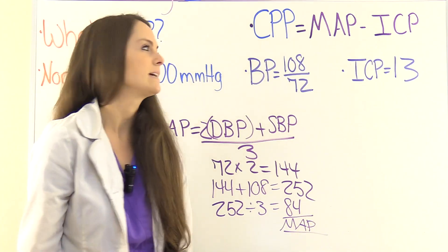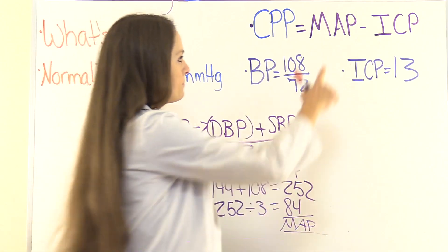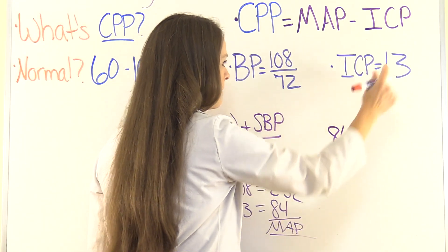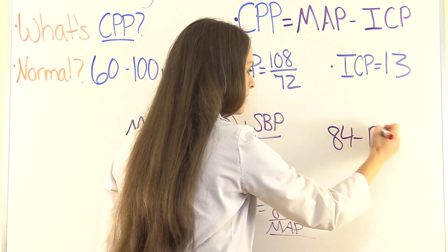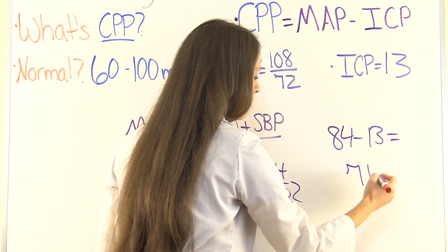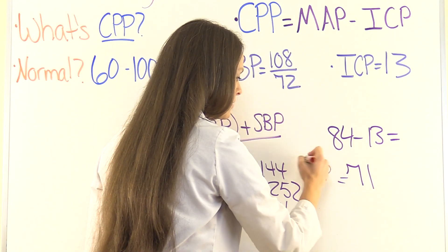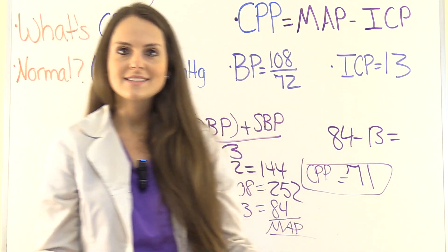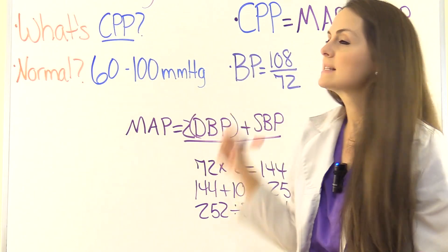Now it's super easy — we're going to plug in our numbers. MAP was 84, so 84 minus 13 — the intracranial pressure — equals 71. So our cerebral perfusion pressure is 71. And is this normal? Yes, it is within normal limits.